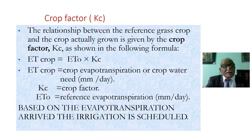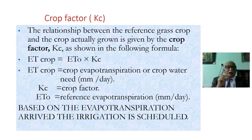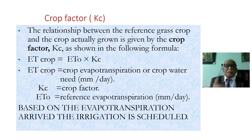The crop factor Kc represents the relationship between the reference grass crop and the crop actually grown. As shown in the formula: ET-crop equals E-tvo multiplied by Kc. ET-crop is the crop evapotranspiration or crop water need in millimeters — how many millimeters of water we should give on a particular day. Kc is the crop factor and E-tvo is the reference crop evapotranspiration.